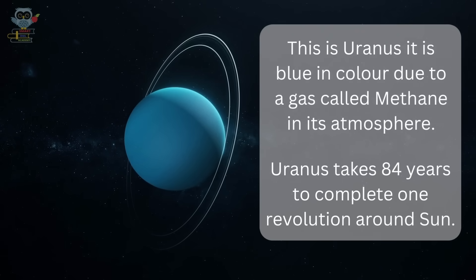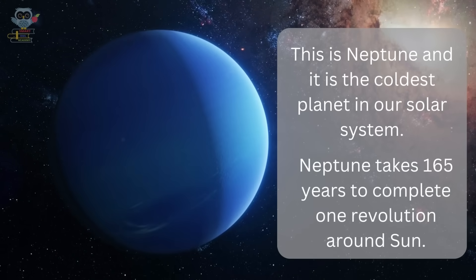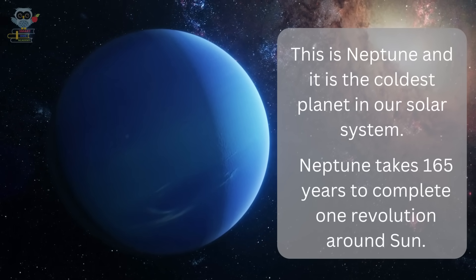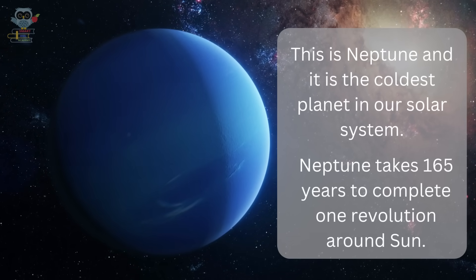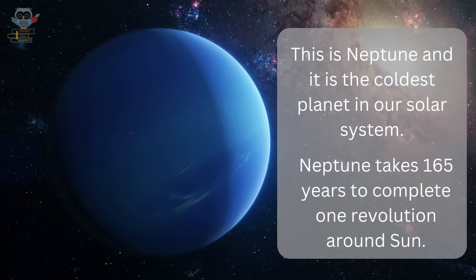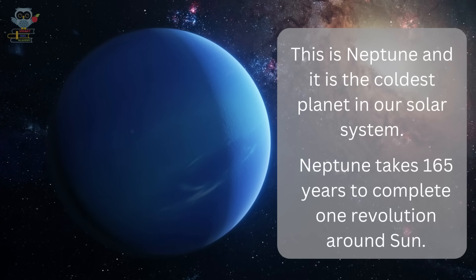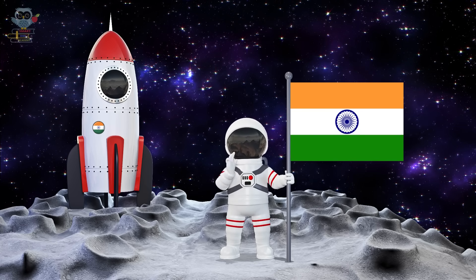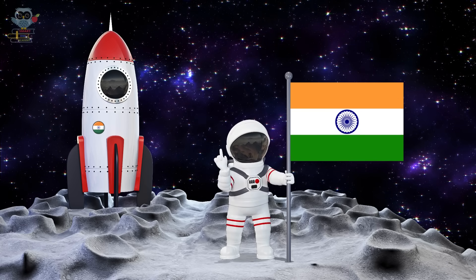This is Neptune, and it's the coldest planet in our solar system. Neptune takes 165 years to complete one revolution around the Sun.